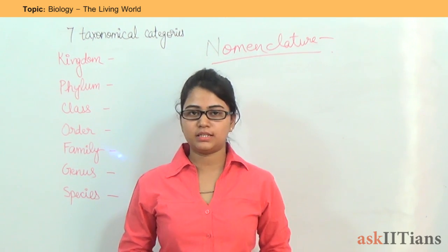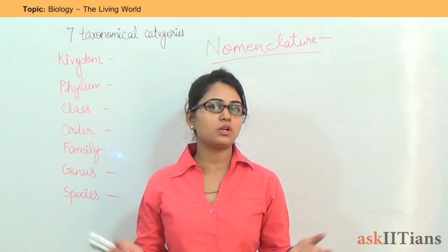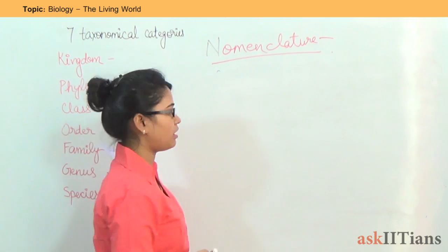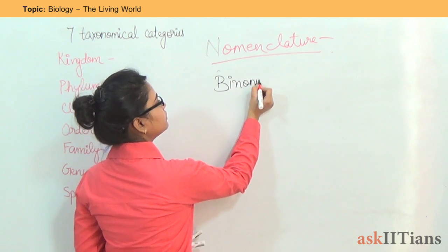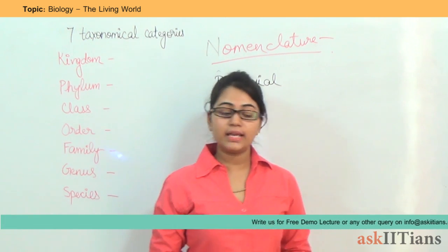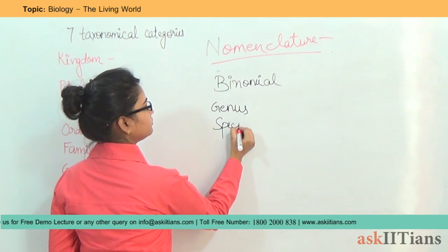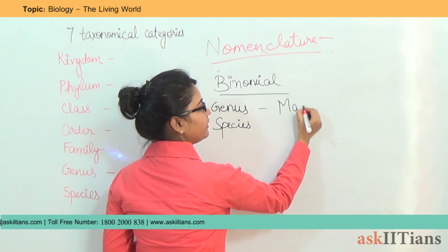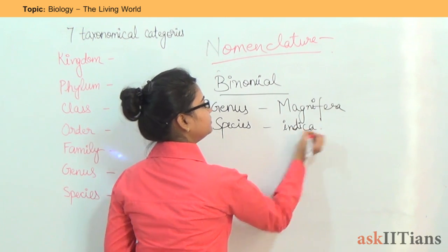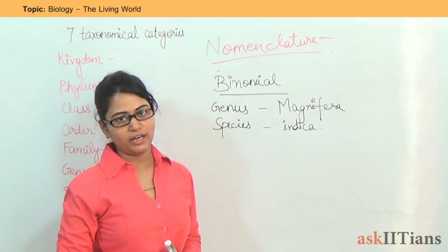Then came the trinomial system. Under trinomial nomenclature, three names are given: the genus, the specific name, and the subspecific name — but that is also not accepted. The nomenclature that is accepted is the binomial nomenclature, in which we give two names to one organism: one is the genus and one is the species. For example, the mango tree is called Mangifera indica. This system was also given by Carolus Linnaeus, who is known as the father of binomial nomenclature as well.